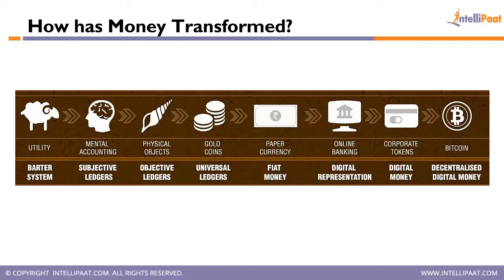Coins became predominant across civilizations and geographies. People started exchanging using silver or gold coins. From there, we evolved into using paper currency because metals were becoming scarce and were not cost-effective to produce. Paper currency, also known as fiat money, came into circulation — banks started printing currencies backed by gold, and those currencies were circulated in the market.